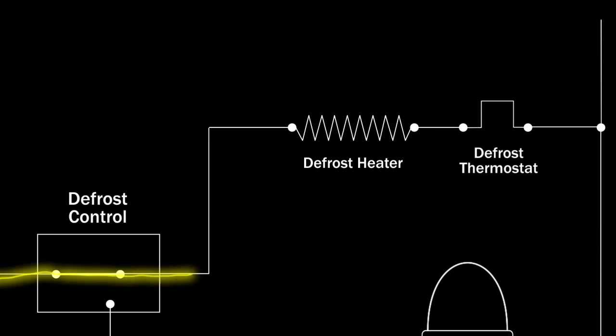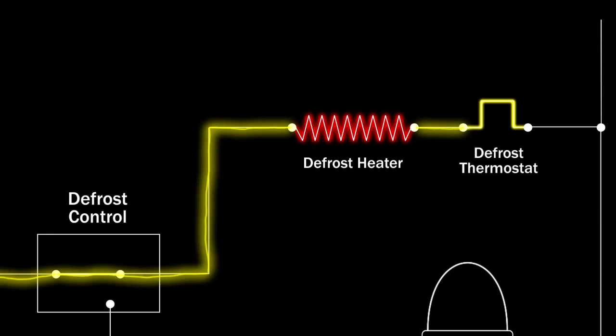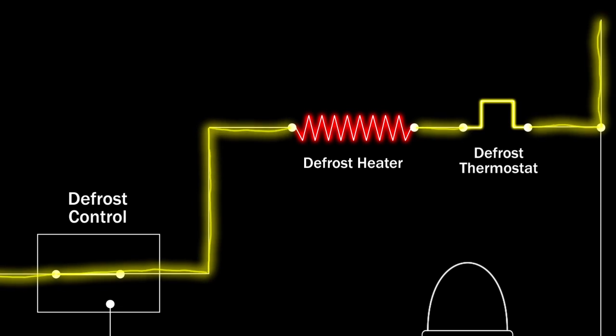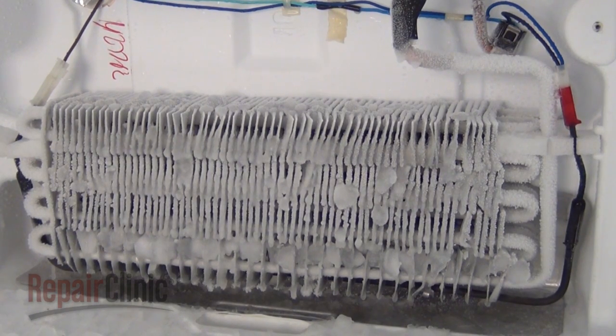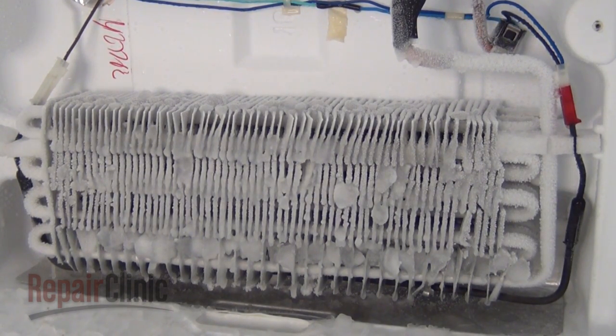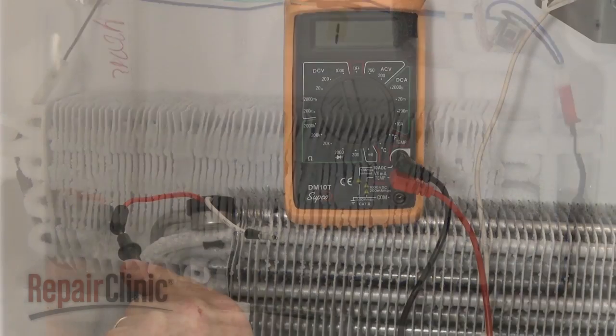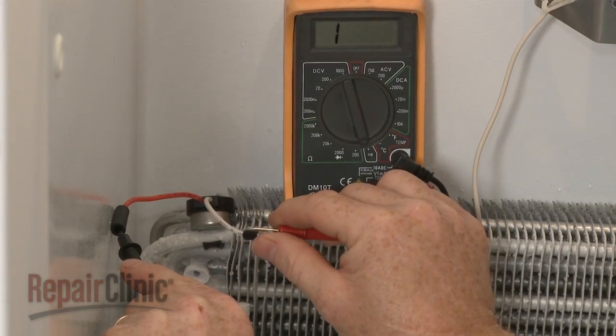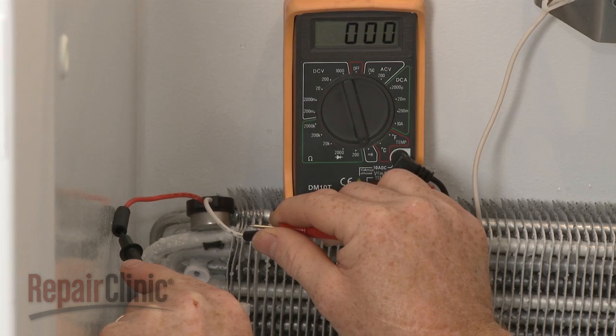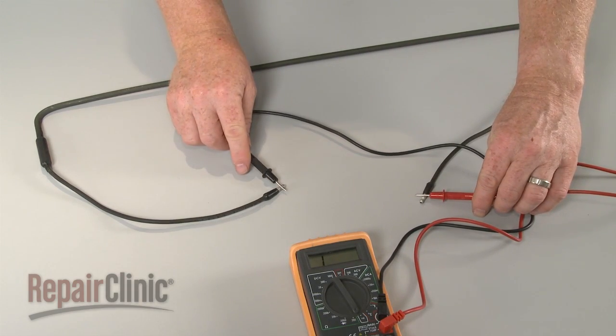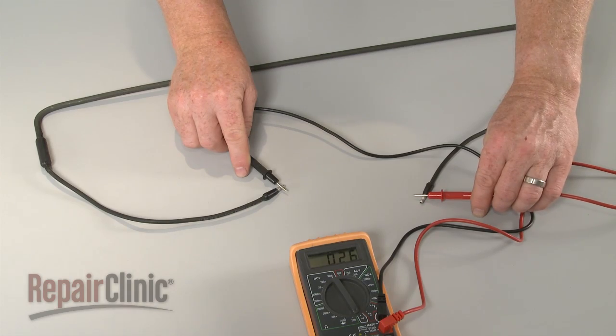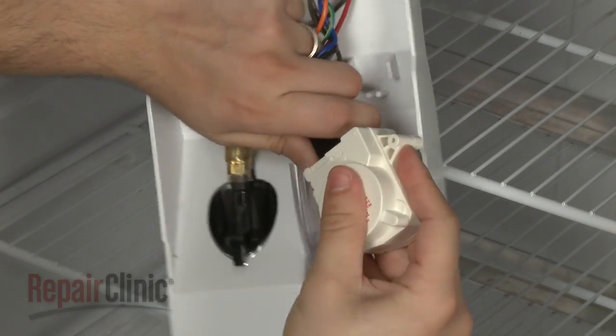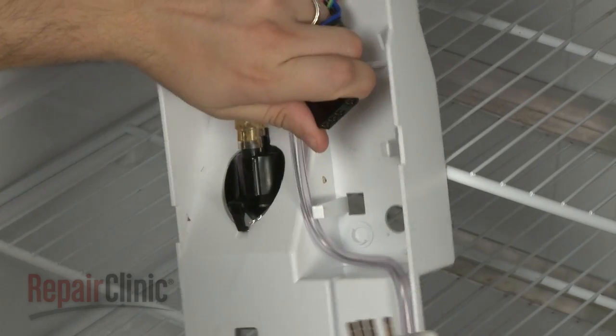The control turns the heater on periodically throughout the day. If the control, thermostat, or heater fail, the evaporator coils will likely frost over, causing poor cooling in the freezer. You can test both the thermostat and heater for continuity to determine if a continuous electrical path is present. If both the thermostat and heater test positive for continuity, it's likely that the control is defective and will need to be replaced.